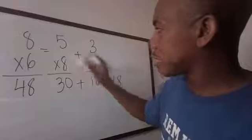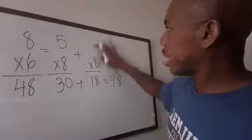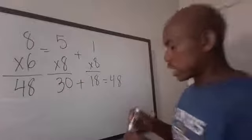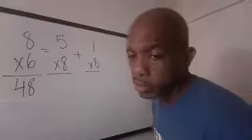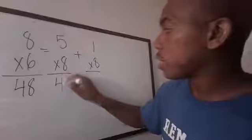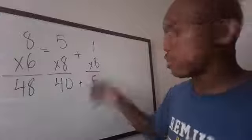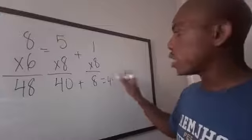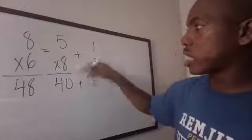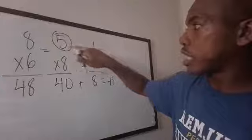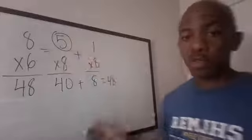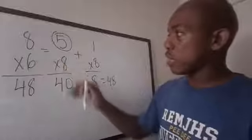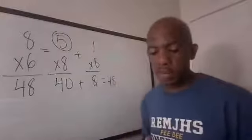Let me also show what happens if you keep the eight constant instead. Then you need the two addends to equal six. So eight times five plus eight times one: eight times five is forty, plus eight times one is eight — that's still forty-eight. You can do it either way. If the six is constant, the other numbers add up to eight. If the eight is constant, the other numbers add up to six. You choose whichever works.